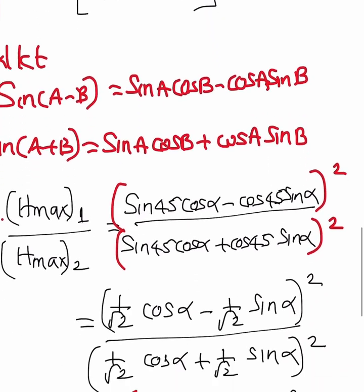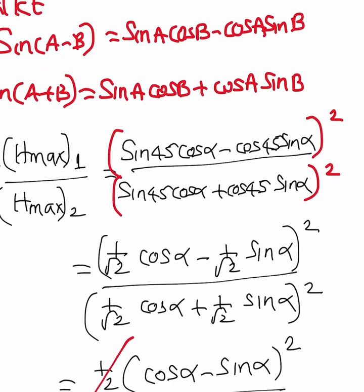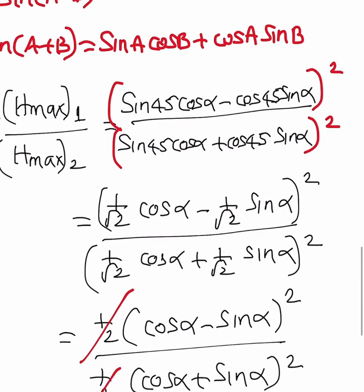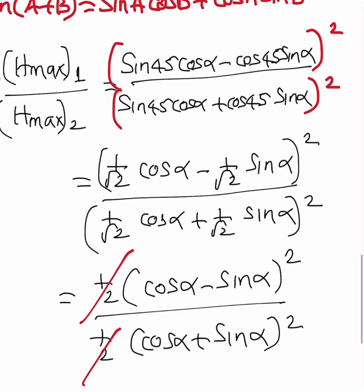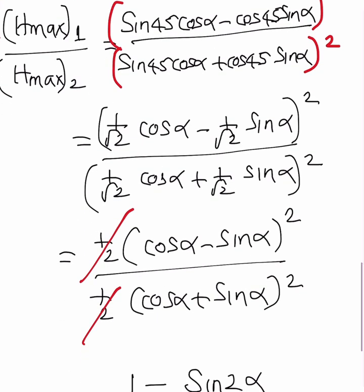Then you will get sine 45 cos alpha minus cos 45 sine alpha in the numerator. In the denominator, sine 45 cos alpha plus cos 45 sine alpha. Sine 45 and cos 45 are 1 by root 2.